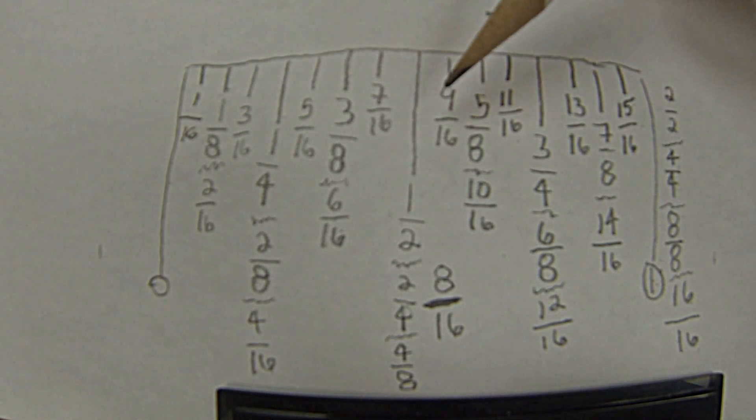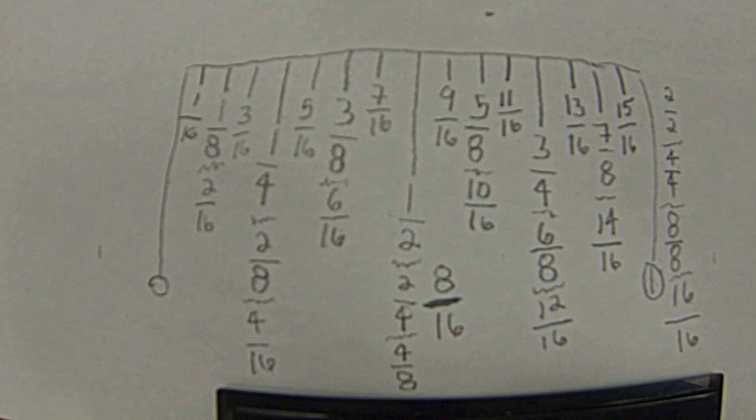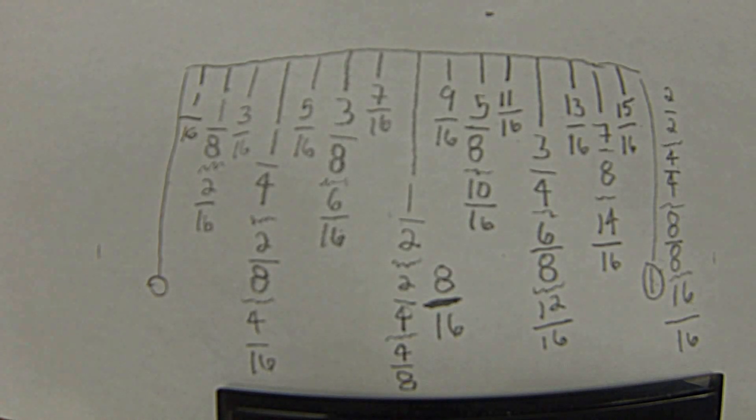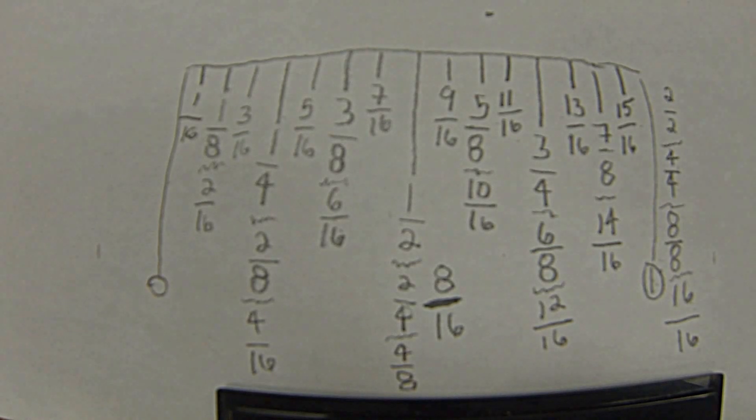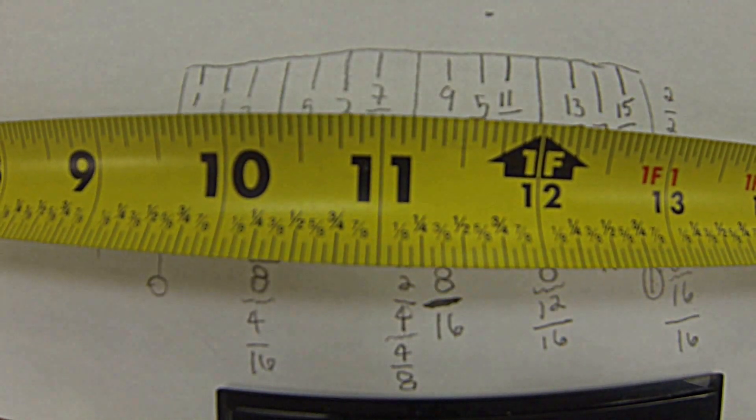Alright, students, that's how you read a ruler. Count up the sixteenths and then simplify your answer. If it's more than a whole number, record the whole numbers as you pass them, then count from the whole number to your measurement to establish your final answer. Good luck and happy measuring.